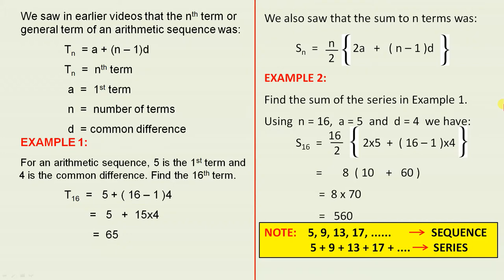We saw in earlier videos that the nth term, or general term, of an arithmetic sequence was Tn equals a plus n minus 1d. Tn was the nth term, a was the first term, n was the number of terms and d was the common difference.